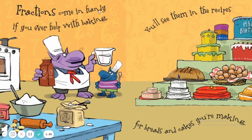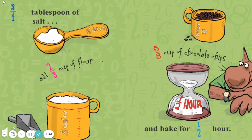Fractions come in handy. If you ever help with baking, you'll see them in the recipes for breads and cakes you're making. Three fourths tablespoon of salt, add two thirds cup of flour, five eighths cup of chocolate chips, and bake for half an hour.